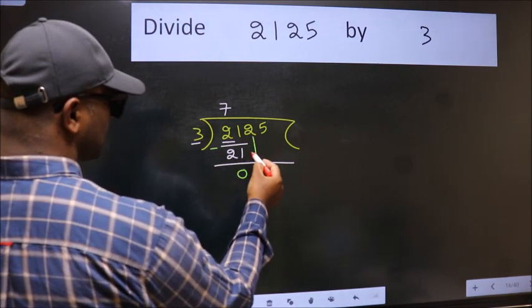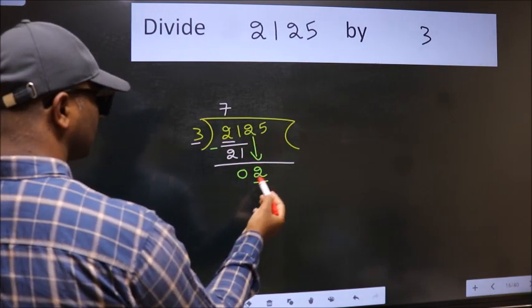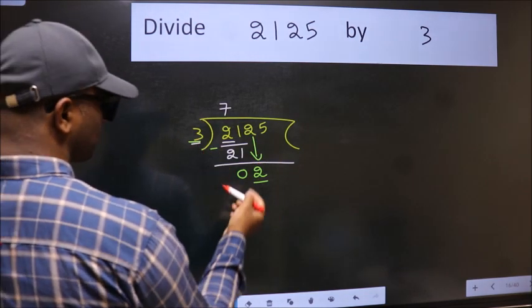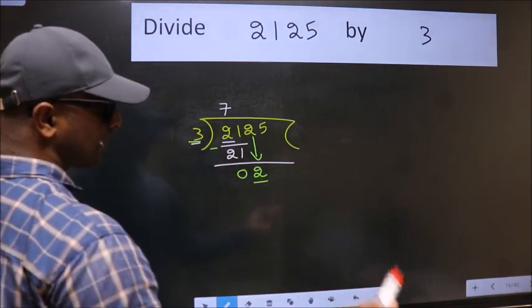After this, bring down the beside number. So 2 down. Now here we have 2 and here 3. 2 is smaller than 3, so we should bring down the second number.